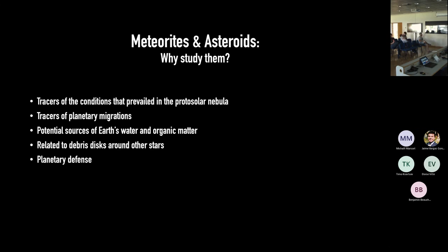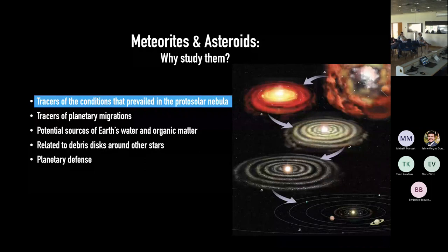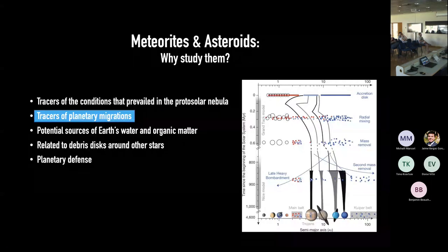One reason we care about small bodies is that they are tracers of the chemical and thermal conditions that prevailed in the protoplanetary disk 4.5 billion years ago. On Earth, all the rocks were processed geologically — at some point the Earth was a giant magma — so we lost that early solar system information. But some categories of meteorites retained it. The second reason is that small bodies are exquisite tracers of planetary migration that happened during the first million to 100 million years of solar system evolution, allowing us to constrain dynamical models of the solar system's architecture.